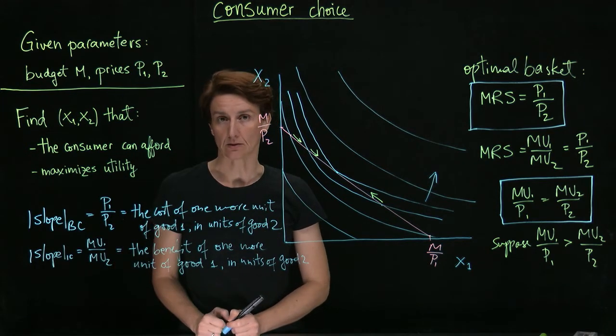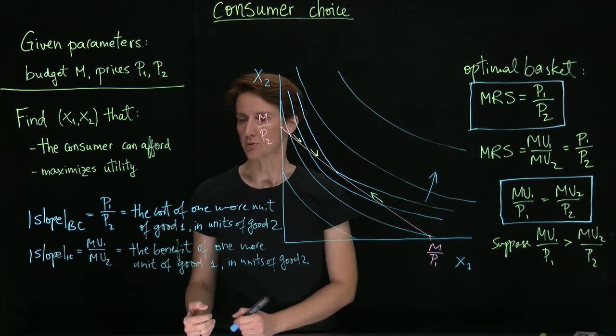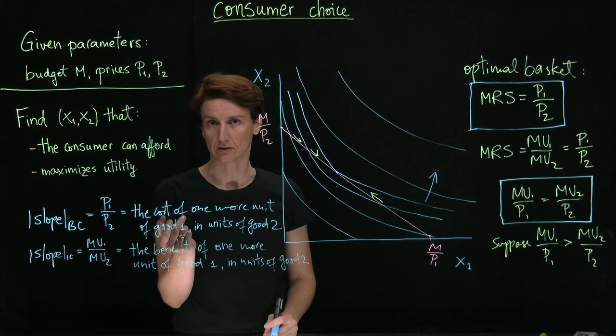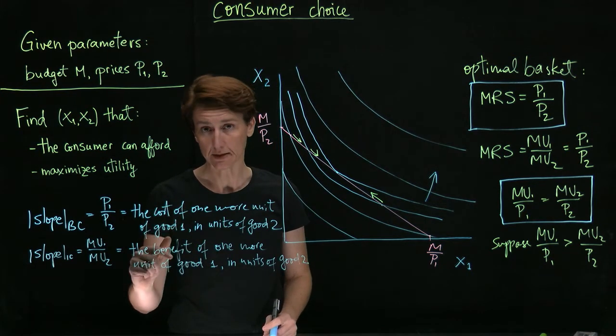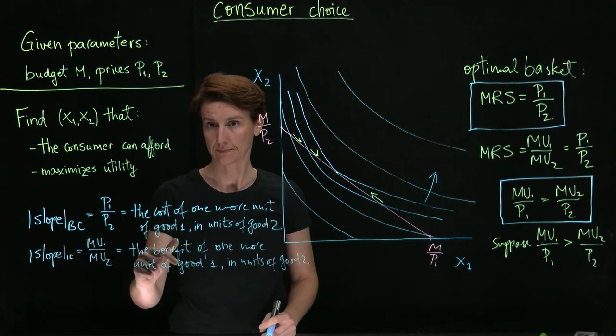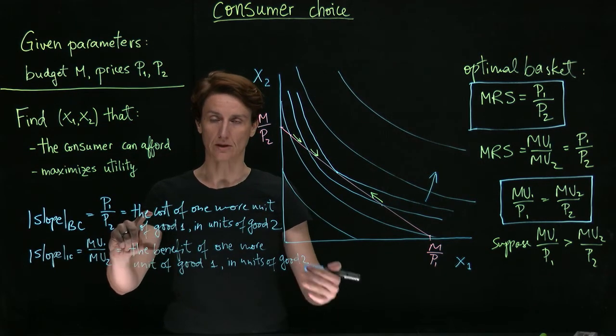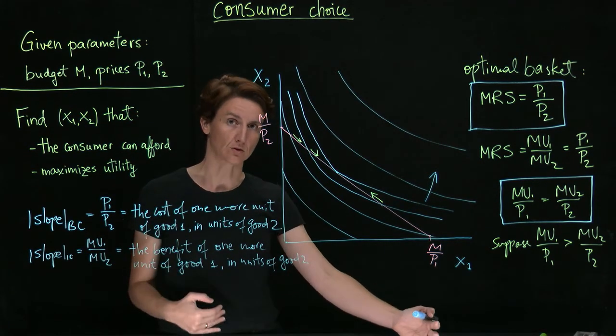In order to determine whether we are at the optimal basket, we just need to compare these slopes. Suppose, for example, that the cost of an extra unit of good one is smaller than the benefit of an extra unit of good one. That would mean that we should go ahead and switch towards buying one more unit of good one.